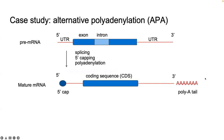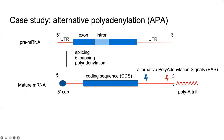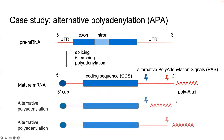Importantly, a number of these processes are not constitutive but alternative, like alternative polyadenylation, where within the 3' UTR, different polyadenylation signals compete and are chosen, and the site of cleavage and polyadenylation is altered.